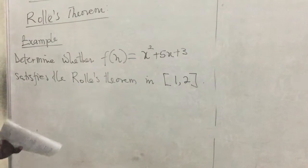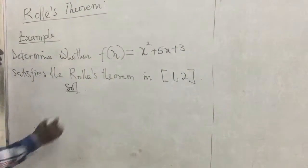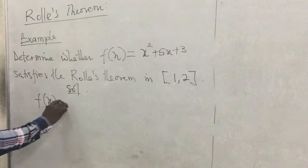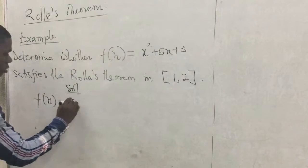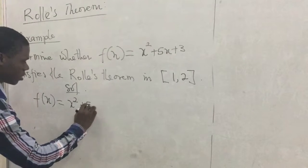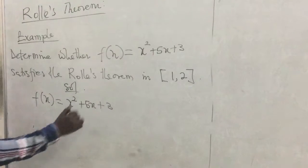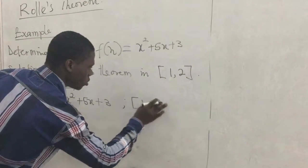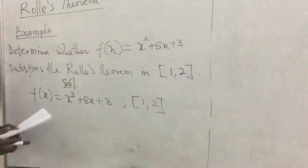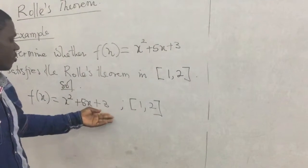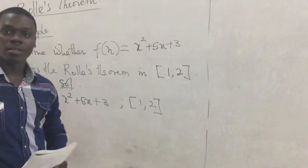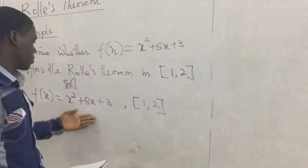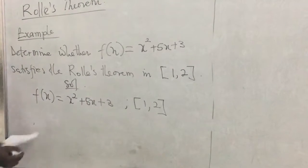Let's get into this example and see how we handle it and conclude whether or not the function satisfies the theorem. We start with step one: finding out whether the function is continuous. We have f(x) = x² + 5x + 3, and the interval we are looking at is the closed interval [1, 2]. This function is already continuous because it is a polynomial function.